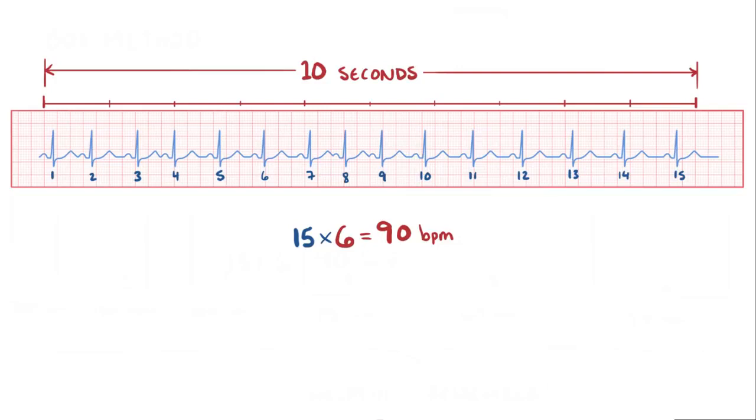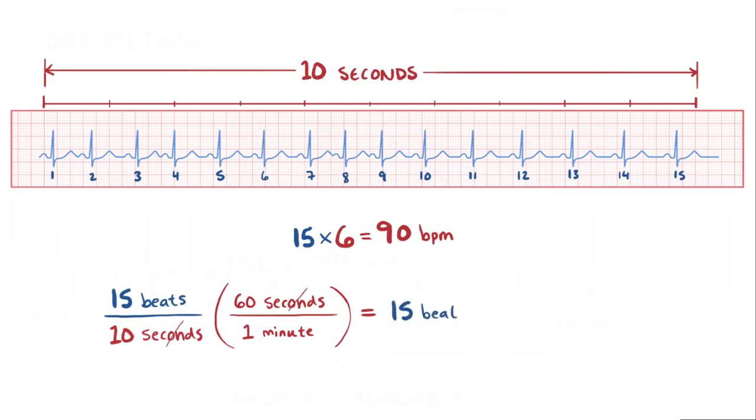The reason this little trick works is because you have 15 beats per 10 seconds, and again, to convert to per minute, you multiply by 60 seconds in a minute. Looking at this, we see that 60 divided by 10 equals 6 per minute, so 6 times 15 is 90 beats per minute.